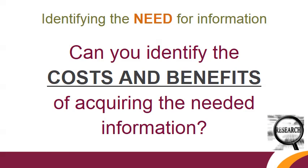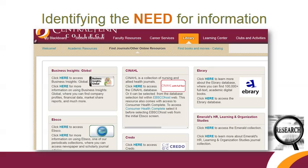Not all information is free or easily accessible. Are you able to identify what information is free to access? As a Central Penn College student, many online scholarly resources are included with your tuition. You can access these resources in the library tab in Blackboard. The World Wide Web also has billions of web pages for you to explore, but not all of them are free.